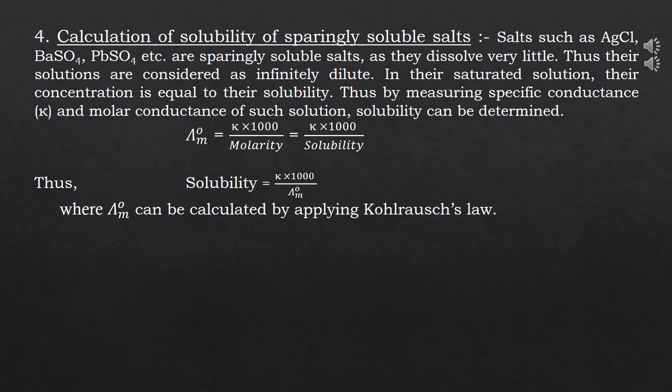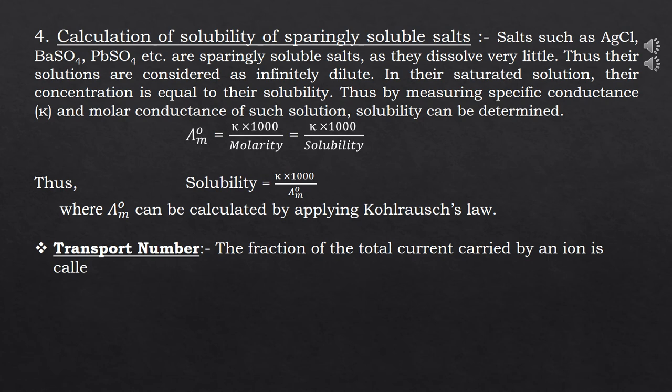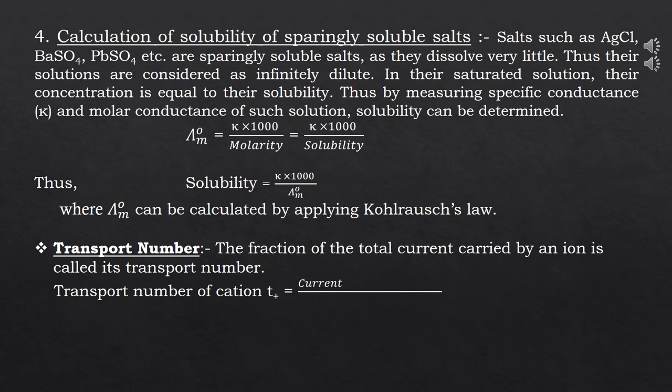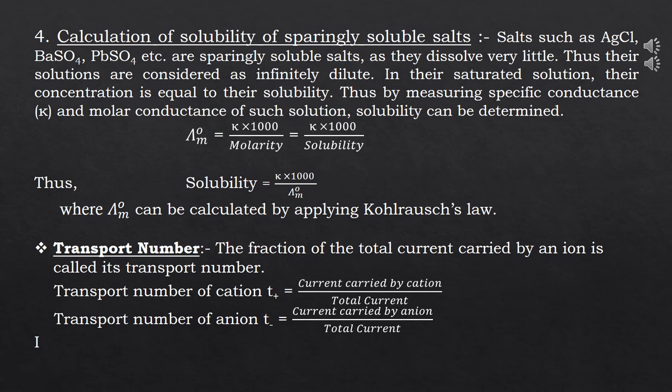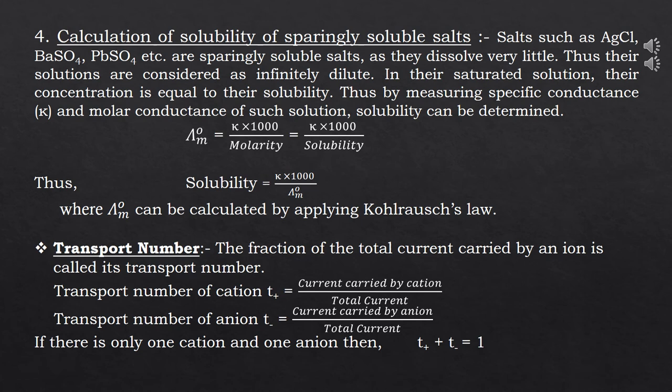An important note: transport number. The fraction of total current carried by an ion is called its transport number. The transport number of cation T⁺ equals the current carried by cation divided by total current. If there is only one cation and one anion in an electrolyte, then T⁺ + T⁻ = 1, that is unity.